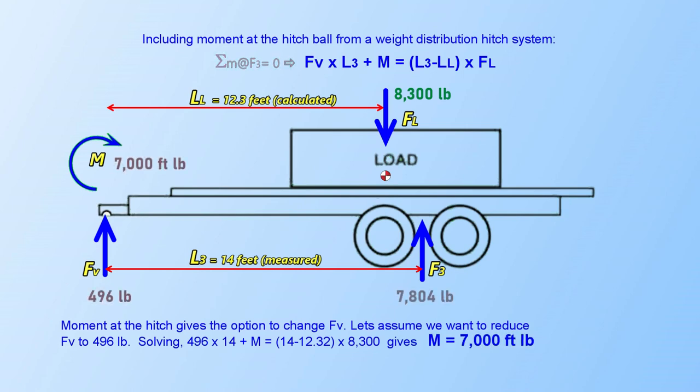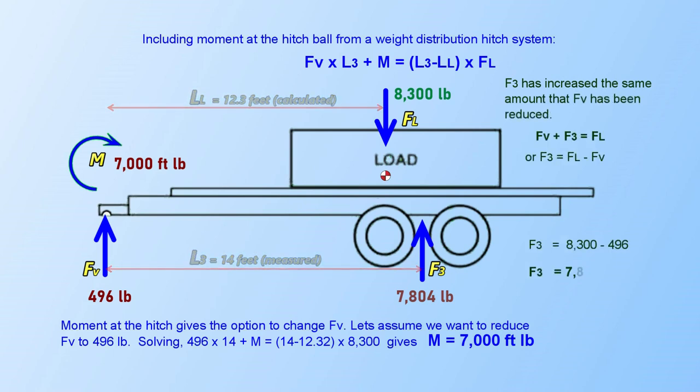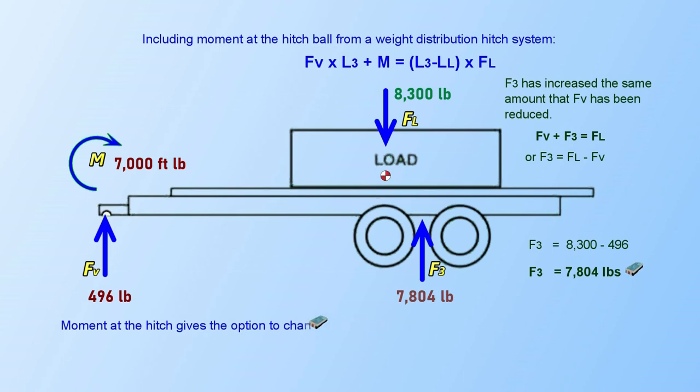In this example, we set FV to 496 pounds, 500 pounds less than the original 996, and calculate the required M to be 7,000 foot-pounds. Note that the trailer axle weight has increased by 500 pounds, the same value that the tongue weight has decreased.